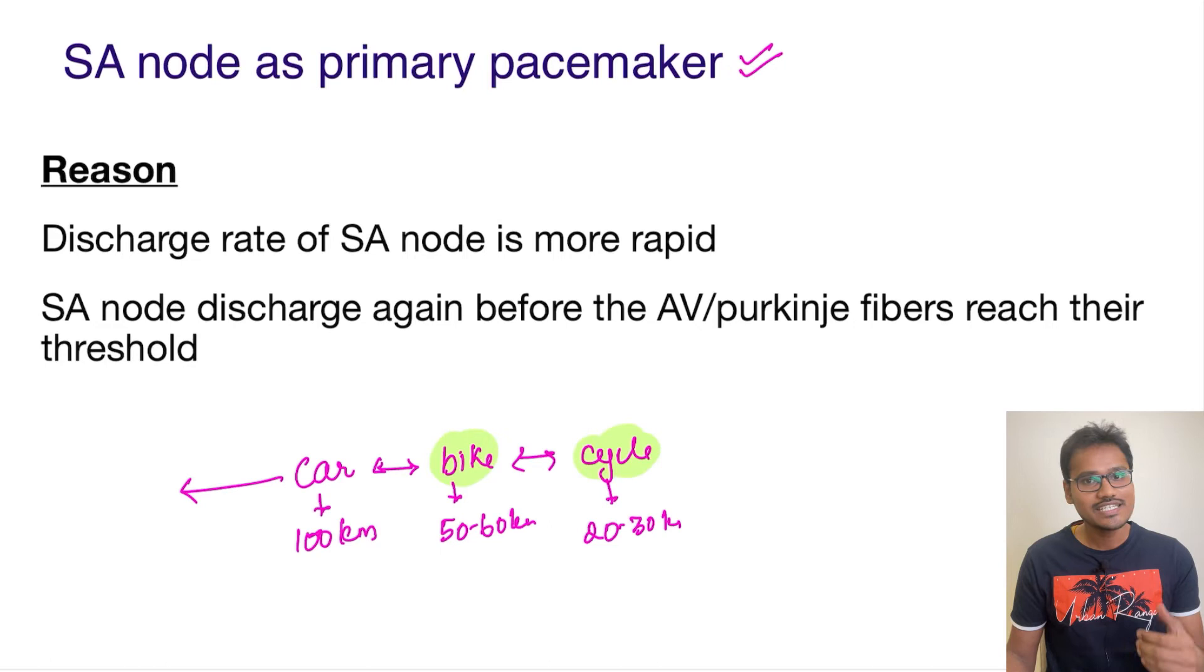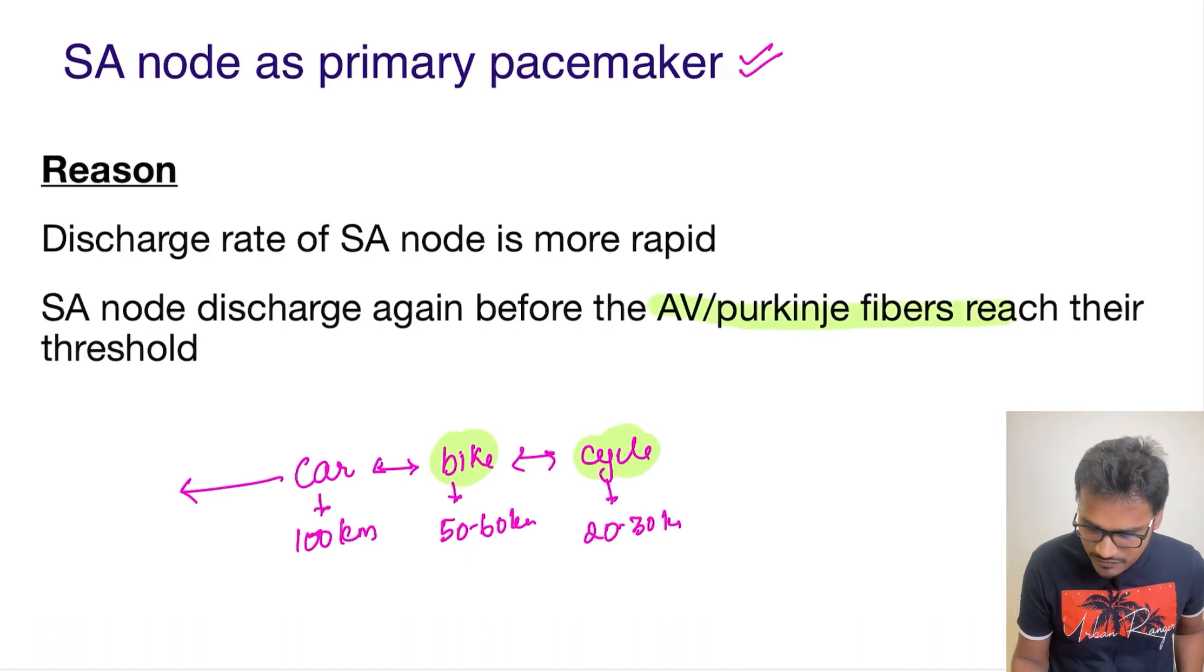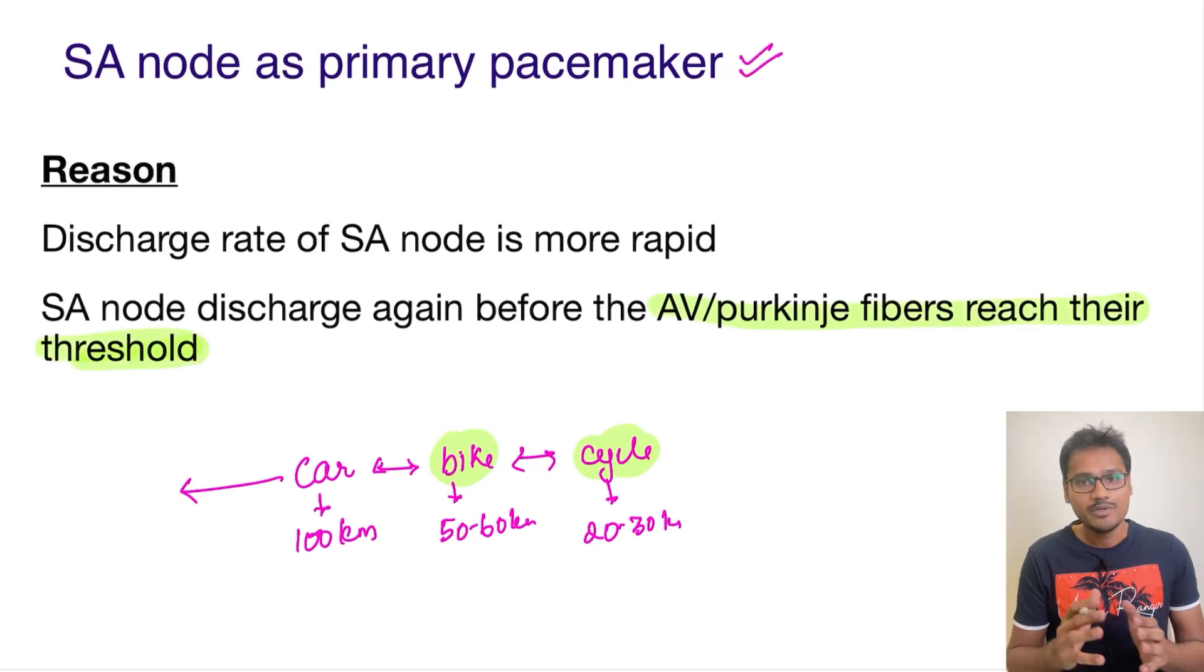So this is just what the SA node is doing. The SA node keeps on firing before the AV or the Purkinje fibers reach their threshold. Before they reach their threshold, the SA node is going to fire again, and the only purpose of the AV node and Purkinje becomes to carry the impulses that are done by the SA node. So the SA node is dominating them.